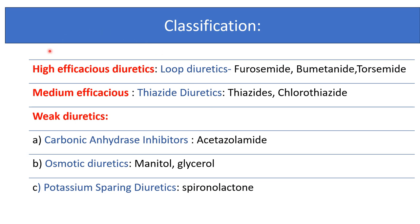Classification of diuretics: highly efficacious diuretics, medium efficacious diuretics, and weak diuretics. Highly efficacious diuretics are loop diuretics — drugs include furosemide, bumetanide and torsemide. Medium efficacious diuretics are thiazide diuretics — drugs include hydrochlorothiazide and chlorothiazide. Weak diuretics include carbonic anhydrase inhibitors (drug: acetazolamide) and osmotic diuretics (drugs: mannitol and glycerol). The third group is potassium-sparing diuretics — drug is spironolactone.